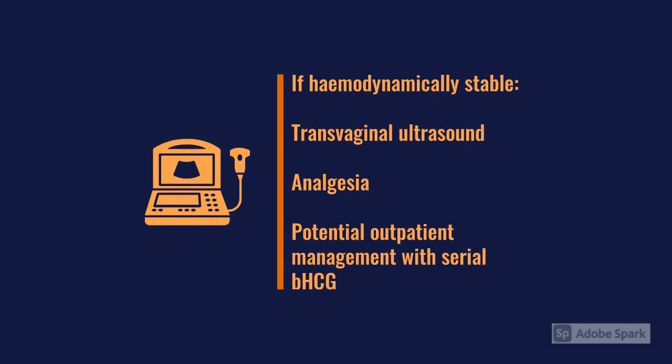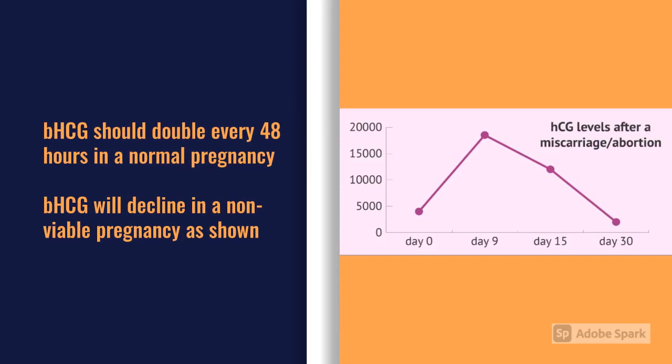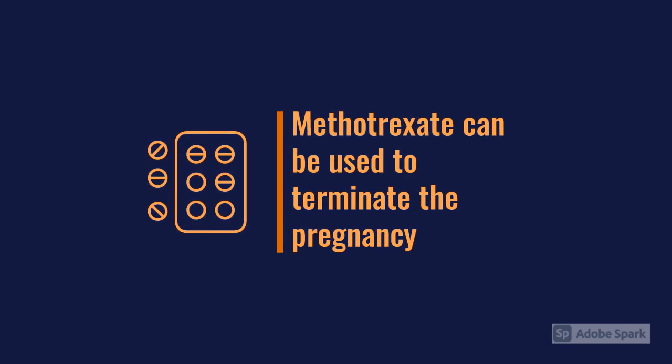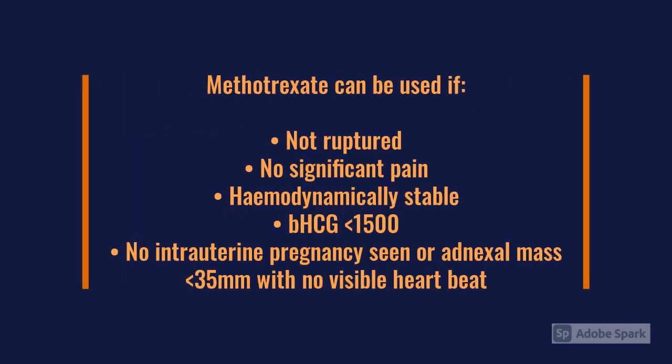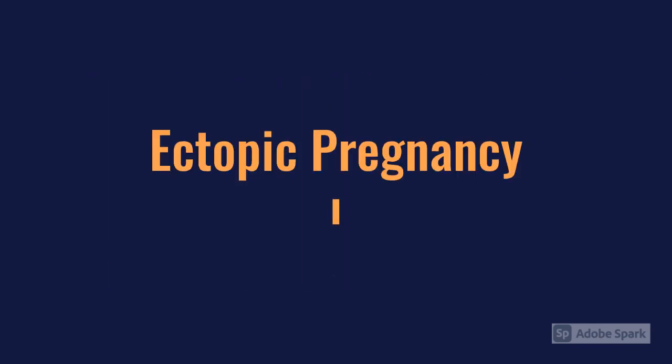If they're hemodynamically stable, this might be managed as an outpatient — discharging them with adequate pain relief, arranging transvaginal ultrasound to locate the pregnancy, and checking serial HCGs. In a normal pregnancy, HCG doubles every 48 hours; it will decline in an ectopic or miscarriage. Medical management with methotrexate can be used if the ectopic is not ruptured, there's no significant pain, they're hemodynamically stable, beta-HCG is less than 1500, and there's no intrauterine pregnancy or adnexal mass on ultrasound.